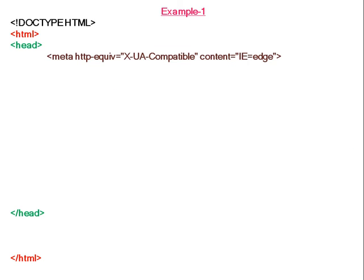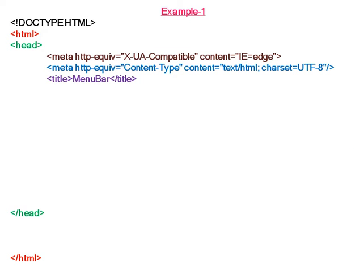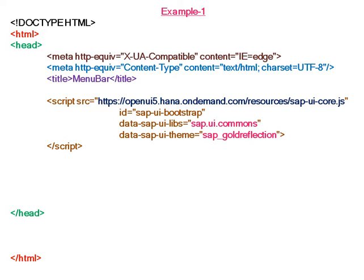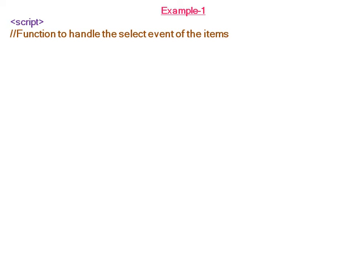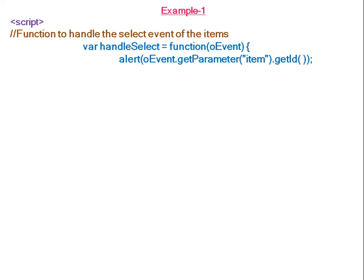In this example, we will create a menu bar. The theme is gold reflection. In the body section, we take a div element with id content. In the application section, we start with the function to handle the select event of the items, so here the event is handleSelect, and we write a function to get an alert.